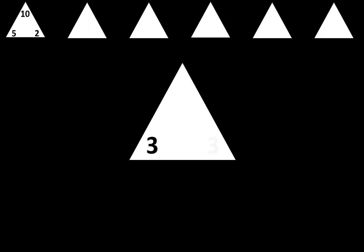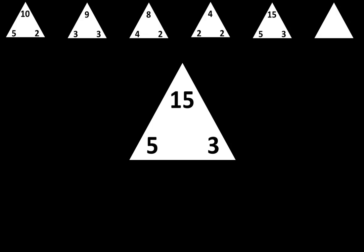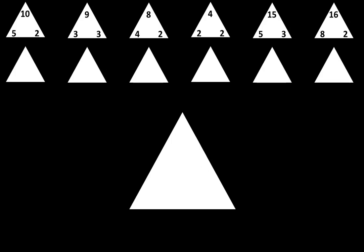The next one is 3 times 3 is equal to 9. The next one is 4 times 2 is equal to 8. The next one is 2 times 2 is equal to 4. The next one is 5 times 3 is equal to 15. The next one is 8 times 2 is equal to 16. Let's move to the next row.